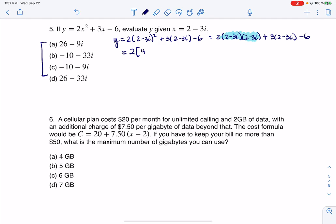So we're going to have 4, outer will be minus 6i, inner is minus 6i, last is 9i squared. Let me be consistent, put a bracket, and then I'm going to have 6 minus 9i minus 6.